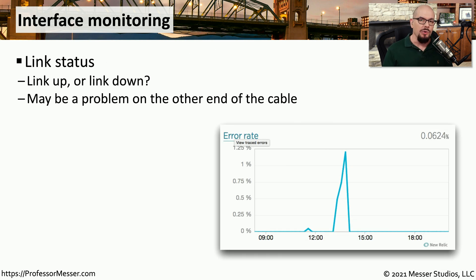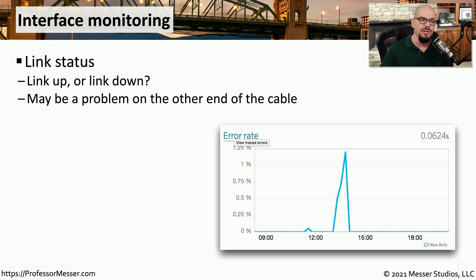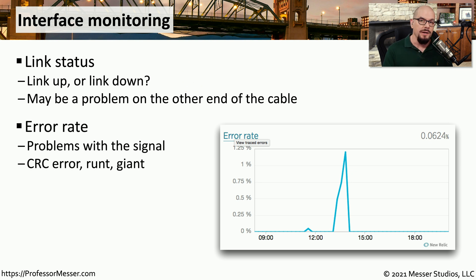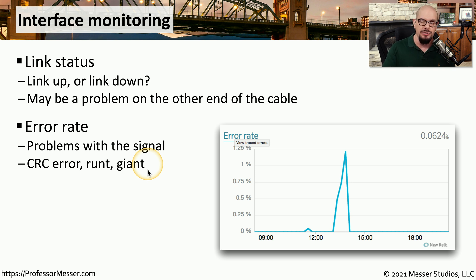One basic metric to monitor is whether an interface is active or not active. Monitoring this on a switch can tell you if a link on the other side has failed and created an outage on your local switch interface. We commonly alert or alarm on that link status so we're informed immediately when a link fails. We also want to monitor interfaces over time to check for errors, such as cyclic redundancy check errors, runts, giants, and other Ethernet errors.